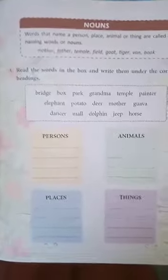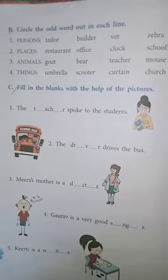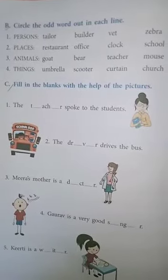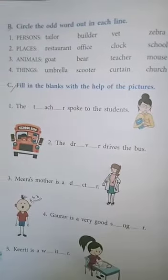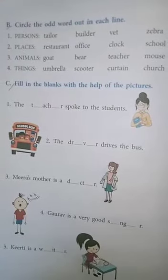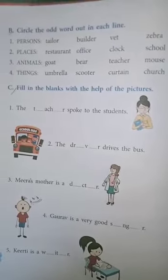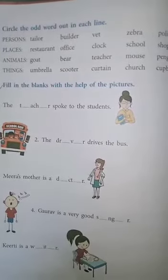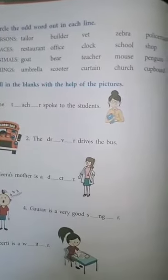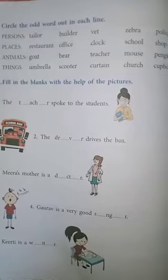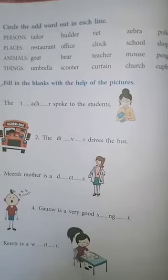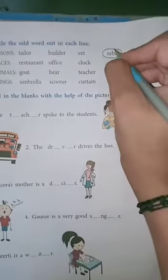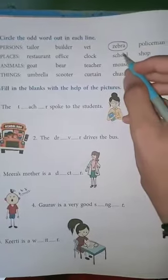Exercise B. Circle the odd one out in each line. First one is the name of a person: tailor, builder, vet, zebra, policeman. What is the odd one? Zebra. Why? Because it is an animal.